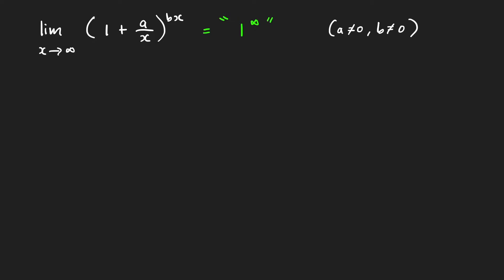What is the strategy in evaluating this indeterminate limit? The strategy here is to write our function as x approaches infinity as e raised to bx times the ln of the base, which is 1 plus a over x.